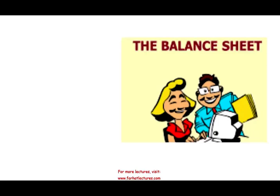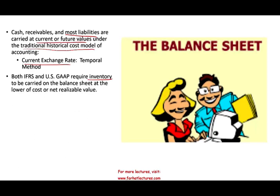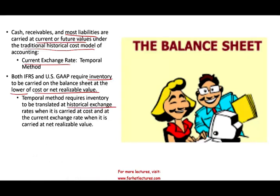Looking at some balance sheet accounts: cash, receivables, and most liabilities are carried at current or future value under the traditional historical cost model, so we use the current exchange rate when translating them. For inventory, IFRS and GAAP require reporting at the lower of cost or net realizable value. The temporal method requires inventory to be translated at the historical exchange rate when carried at cost, or at the current exchange rate when carried at net realizable value.